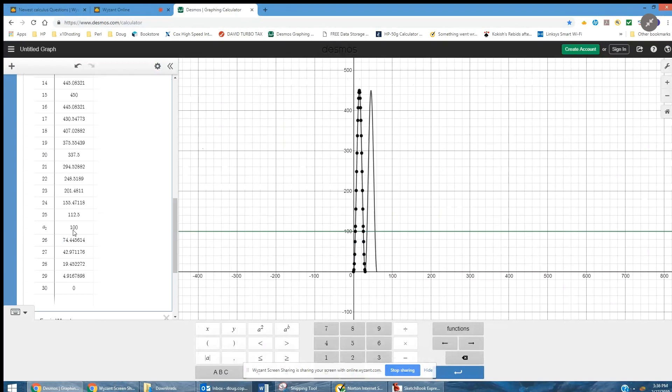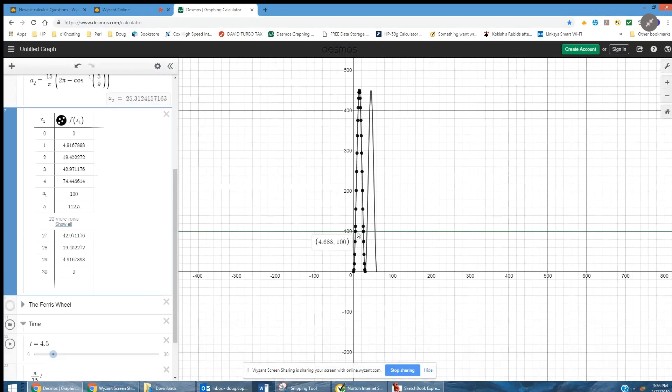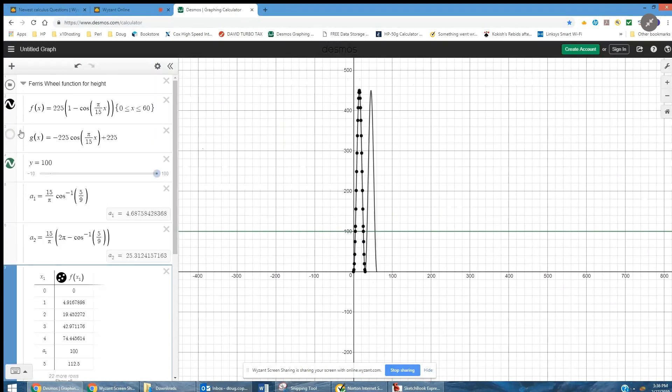And if I show all here, when t is a₂, the height is 100. And that's these two positions right here. Okay, if I enable g(x)...